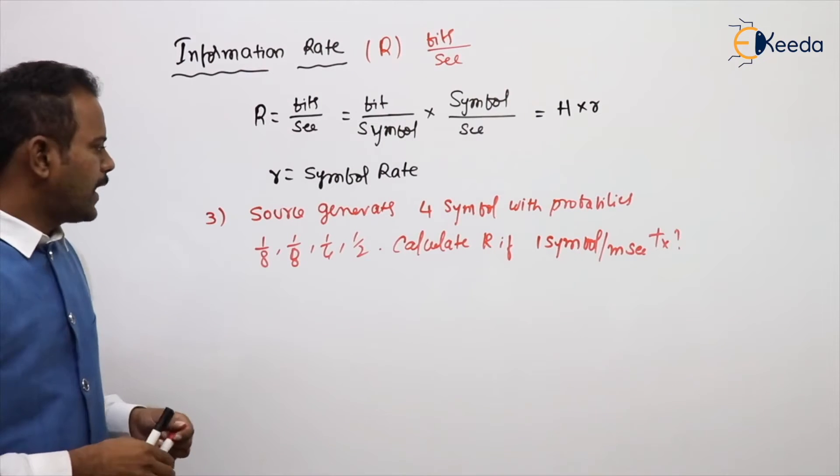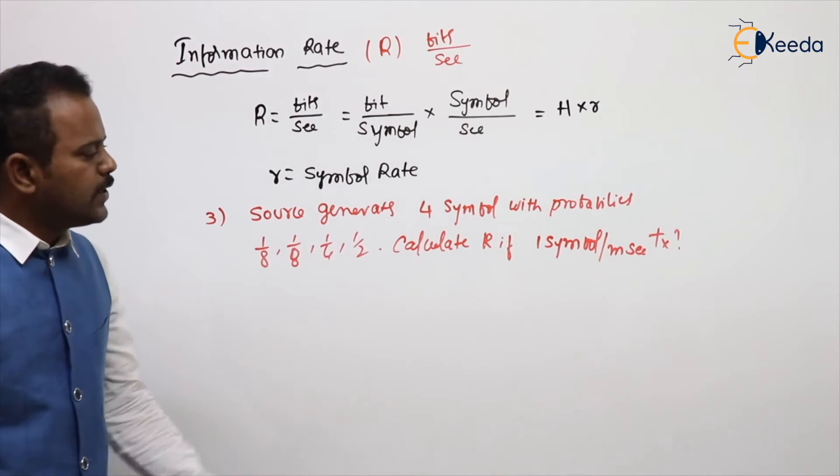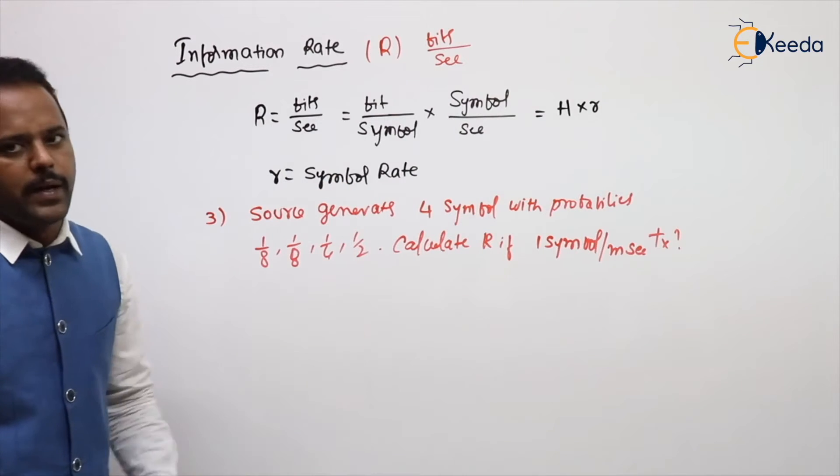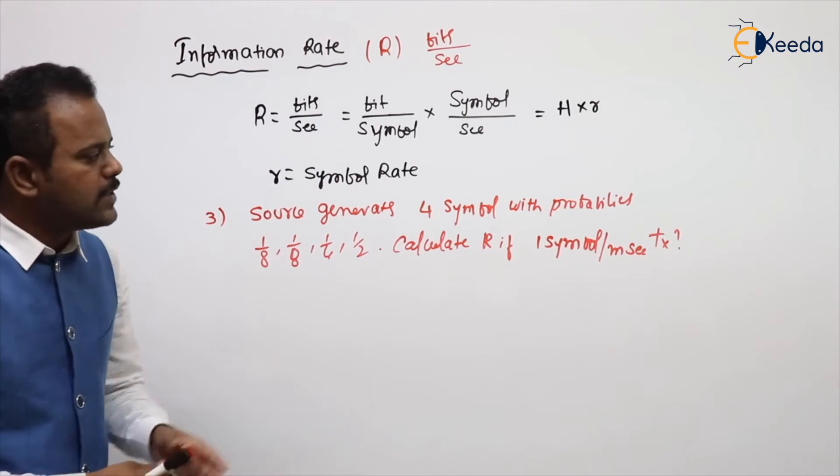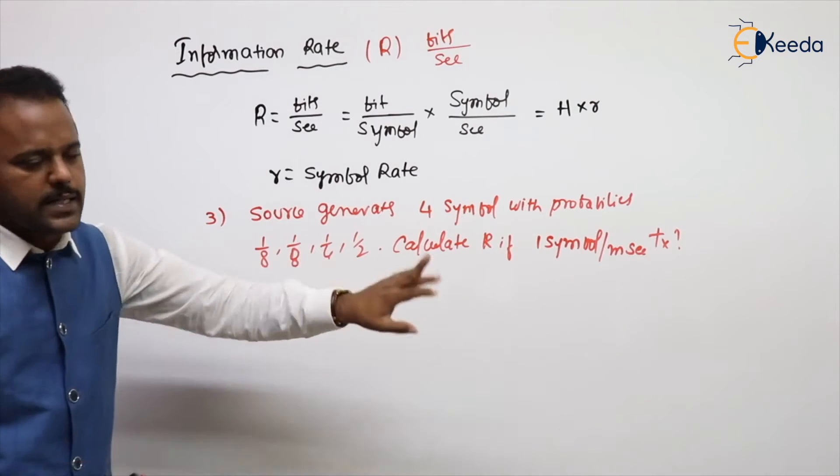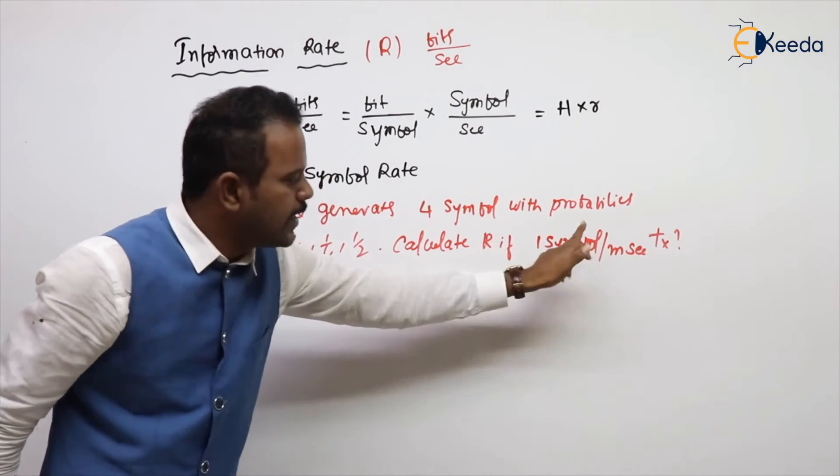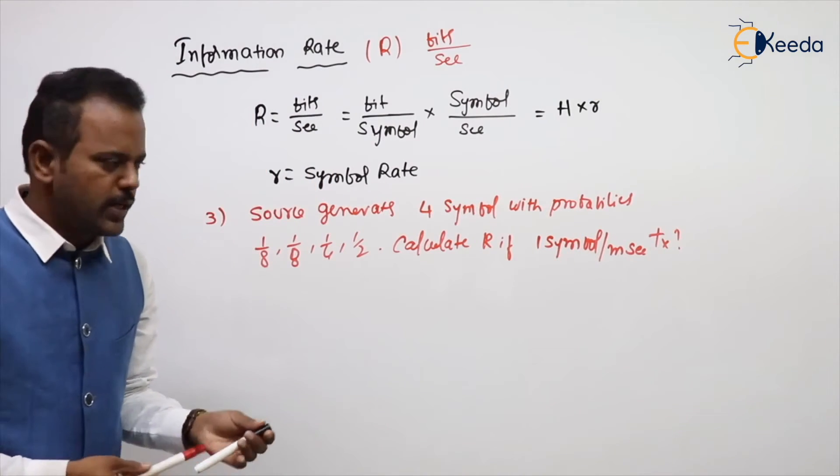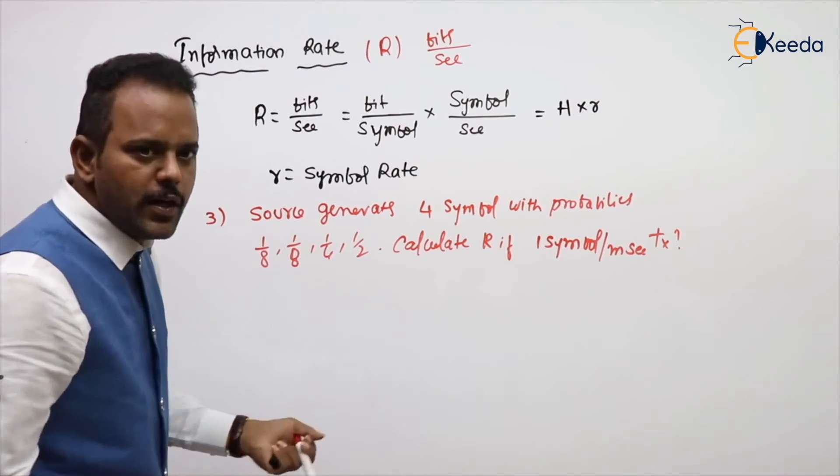What we need to calculate? We need to calculate the information rate if you are sending 1 symbol per millisecond. 1 symbol per millisecond means 1000 symbols per second. First what we need to calculate: entropy.